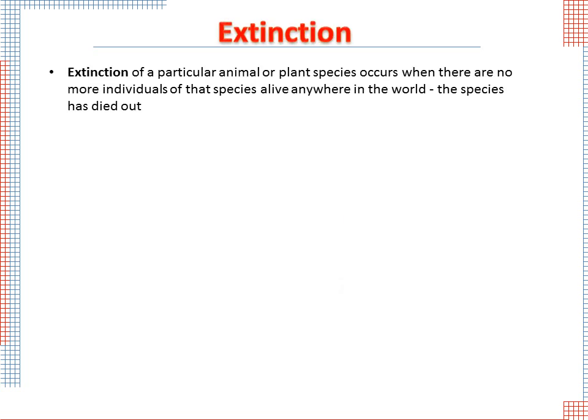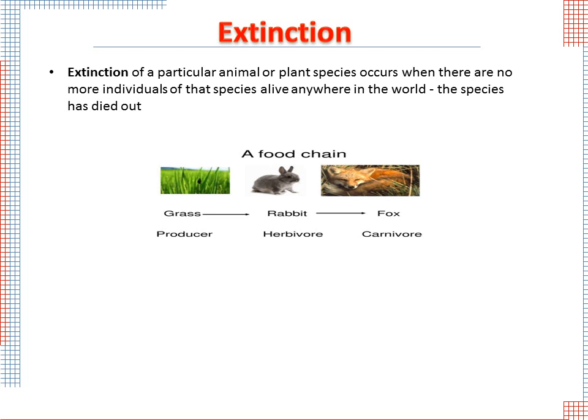Extinction of a particular animal or plant species occurs when there are no more individuals of that species alive anywhere in the world — the species has died out. For example, consider the food chain: grass is eaten by the rabbit, and the rabbit is eaten by the fox. If all the grass in this chain was burned, the primary consumers — the rabbits — will die, and then the secondary consumers — the foxes — will also die.